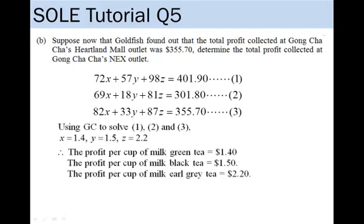In the context of this question, what it means is that the profit per cup of milk green tea equals $1.40, of milk black tea equals $1.50 and of milk earl grey tea equals $2.20.